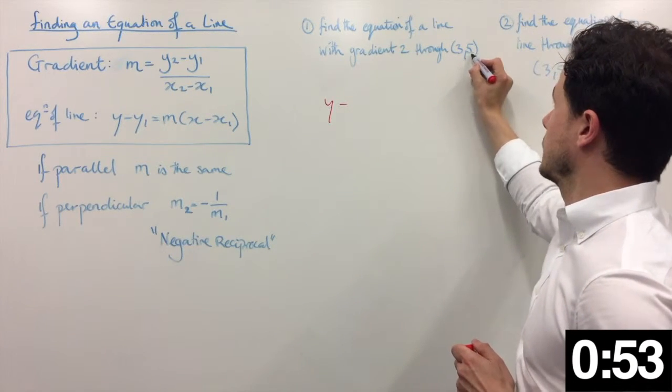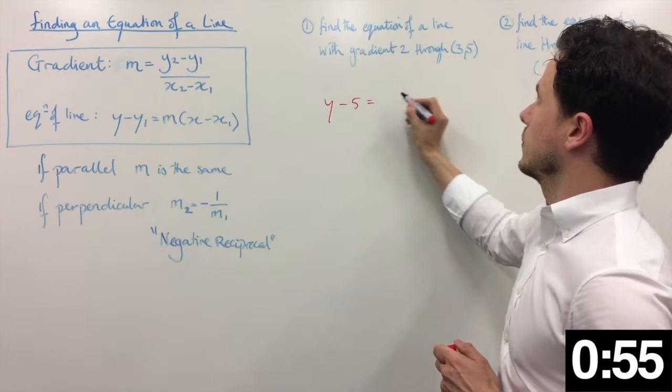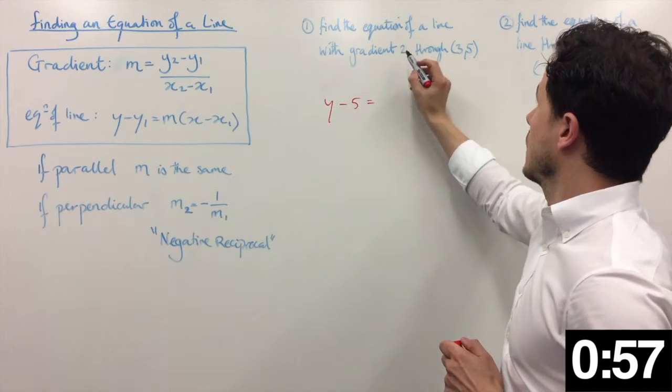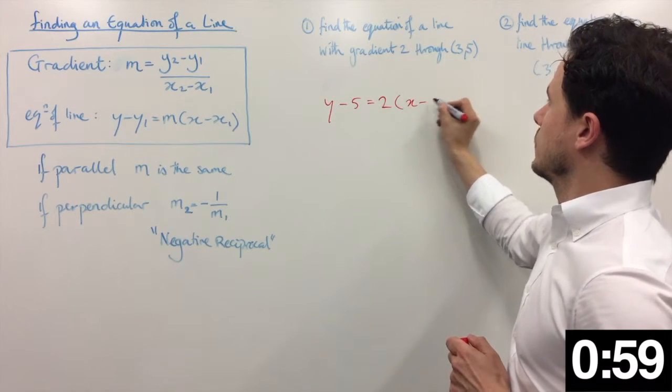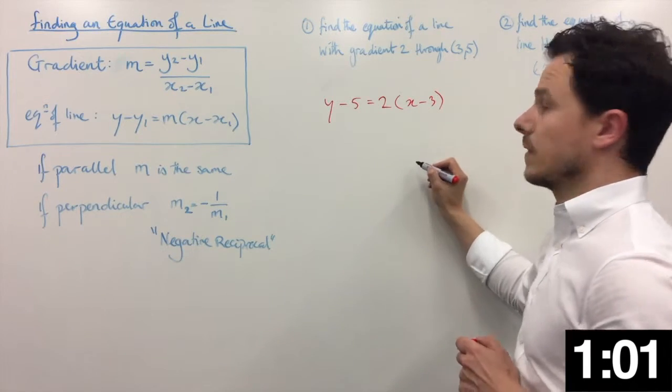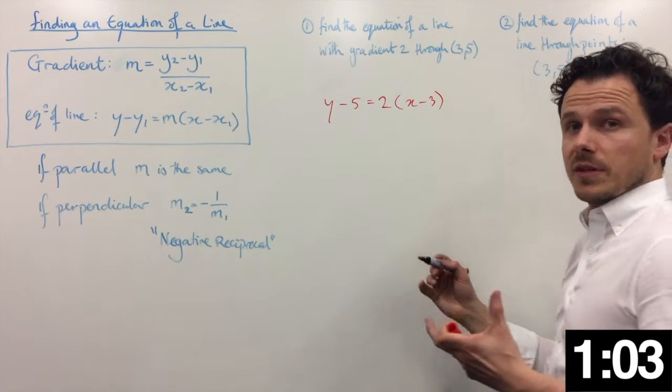So y minus y1, which is 5, equals the gradient m, which is 2, times x minus x1, which is 3. Now it's just a case of rearranging to be in the correct format.